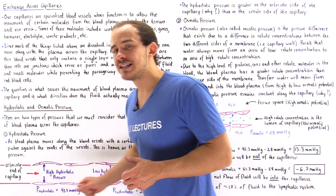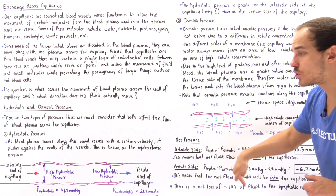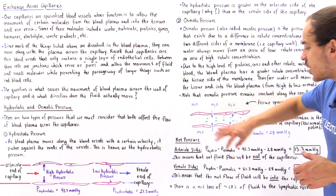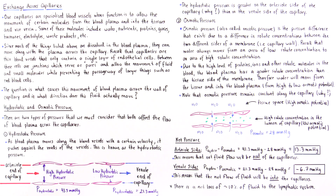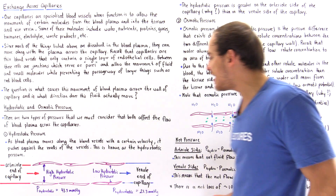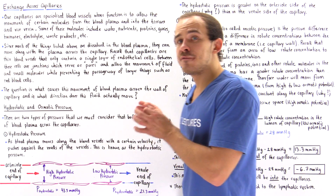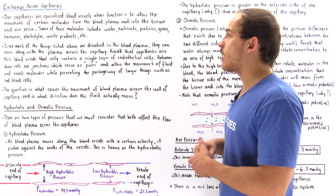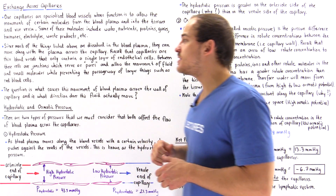Let's begin on the arterial end of the capillary. We know that the hydrostatic pressure points outward, but the osmotic pressure points inward — they point in opposite directions. To find the net pressure, we subtract: P hydrostatic minus P osmotic. So 41.3 mmHg minus 28 mmHg gives us a positive 13.3 mmHg. The fact that this is positive means that the net fluid flow on the arterial end will be out of the capillary and into the tissues — this is where nutrients such as glucose and oxygen flow into the tissues of our body.